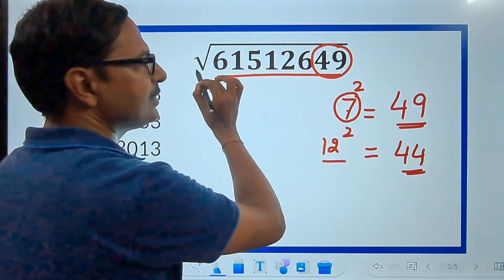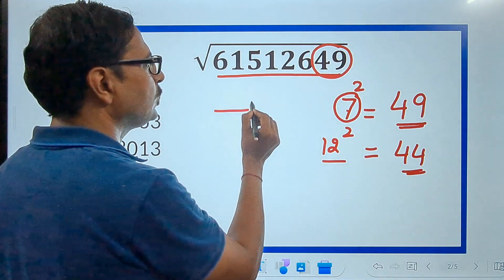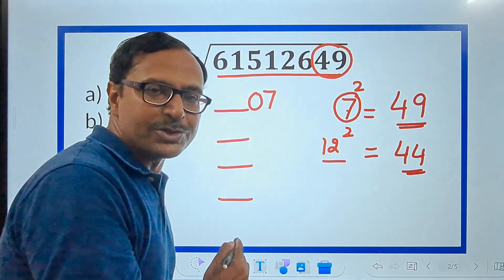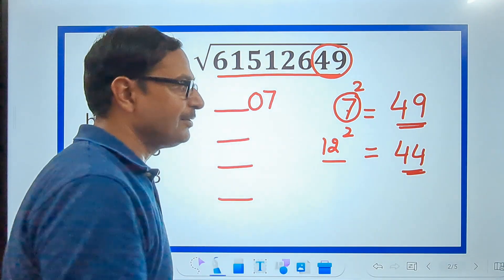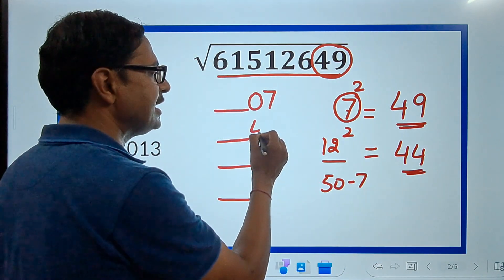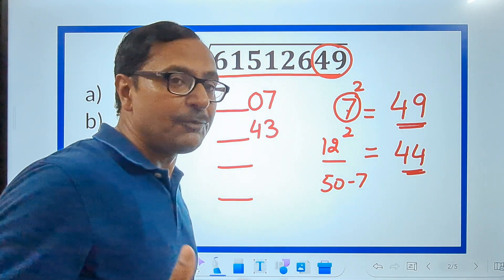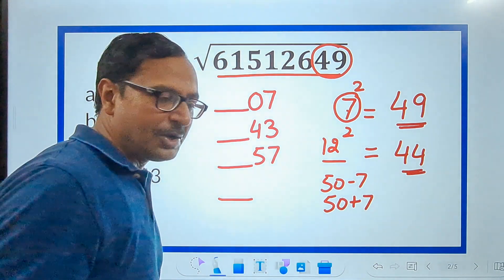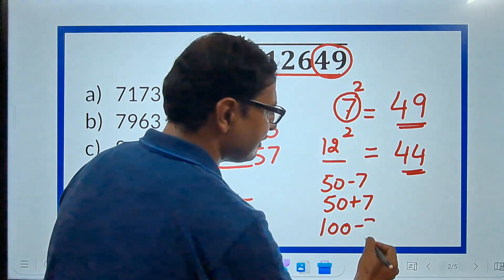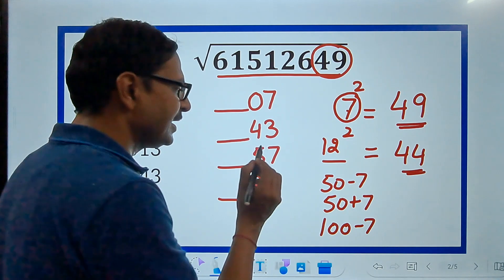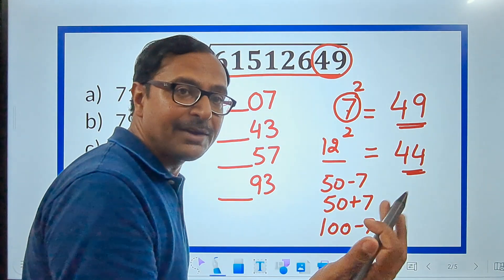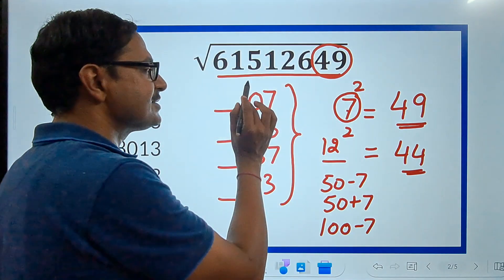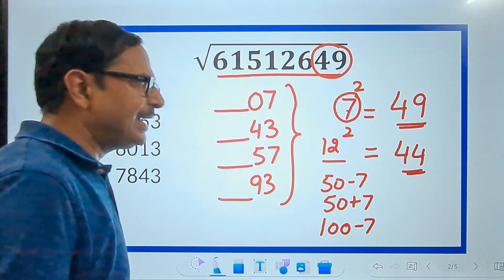7 means my answer, the square root of this number is either going to end in 07 or there are 3 more possibilities. For finding those 3 possibilities, I will subtract this from 50. So, 50 minus 7 is 43. 50 plus 7 which is 57. So, my answer may end in 57 or 100 minus 7 which is 93. If I go beyond this, 100 plus 7 is 107 that ends in 07 again. So, every time you will have 4 possibilities. Your answer will end in either 07, 43, 57 or 93. Pretty easy now. Let's crack the multiple choice question.